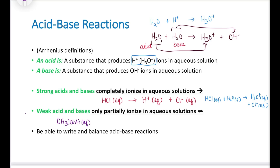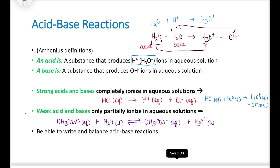A common weak acid is acetic acid — it makes up the smell in vinegar. When put into water, we use what we call equilibrium arrows, and this gives me acetate and H3O+. The reason I use equilibrium arrows is because this reaction is reversible — it actually goes back and forth. Some of it reacts to form acetate and hydronium ion, and some reacts in the other direction.